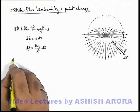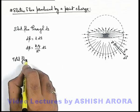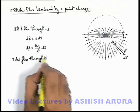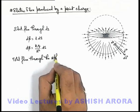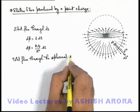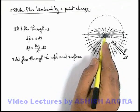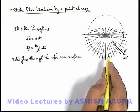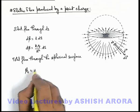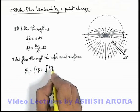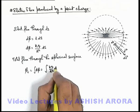If we find out the total flux through the spherical surface which is surrounding the point charge q, considering the whole surface, we can simply write this total flux as integration of dφ, which is integration of kq/r² dS.